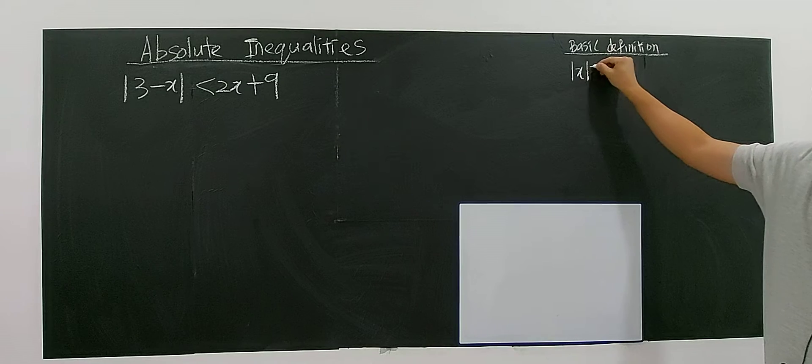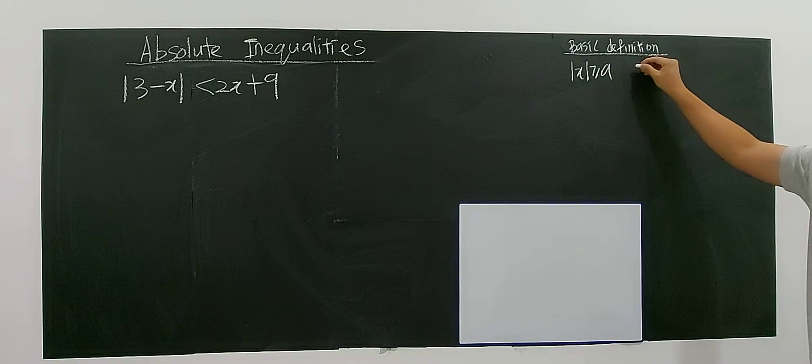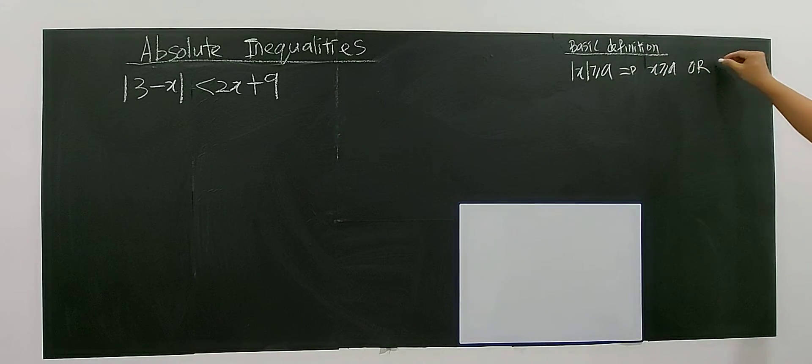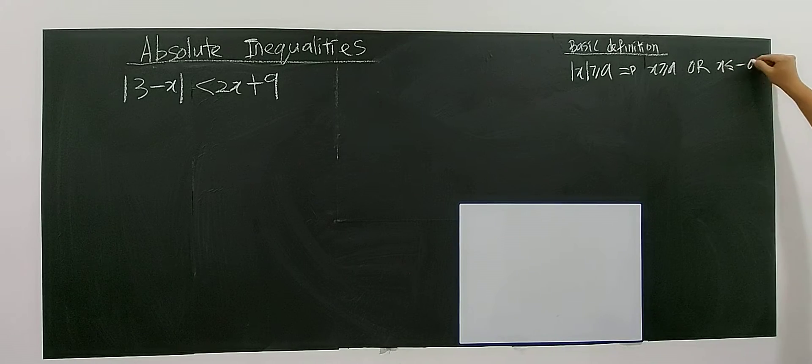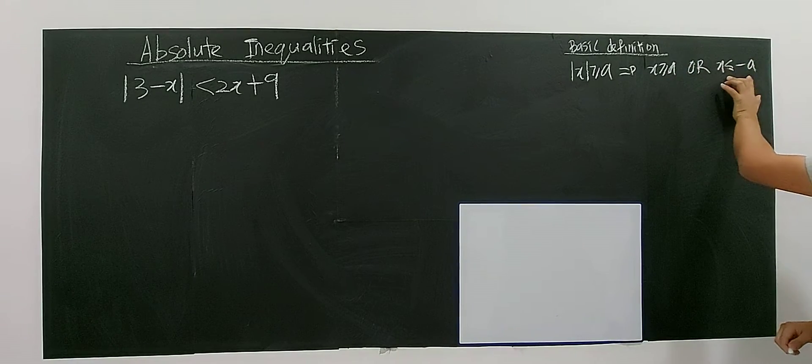if you have modulus x greater or equal to a, right? If greater, you have x greater or equal to a or x less or equal to negative a. One more, the positive a and one less than negative a, and all.